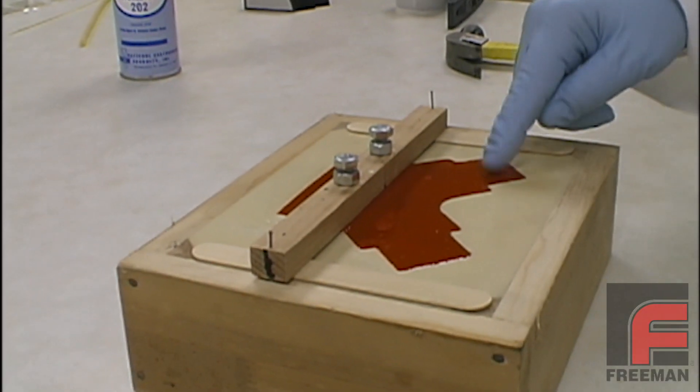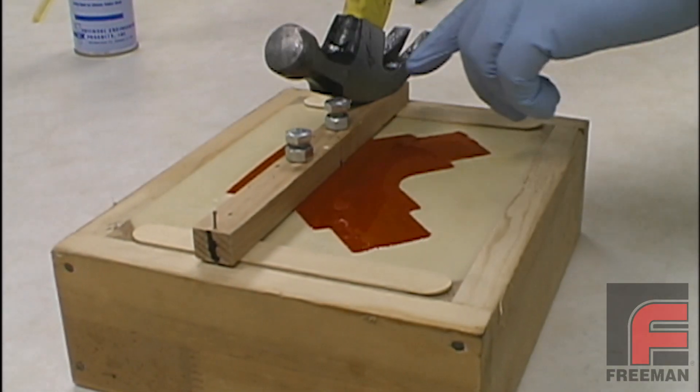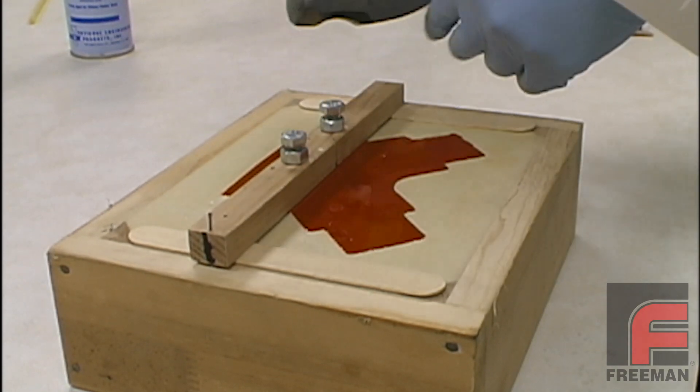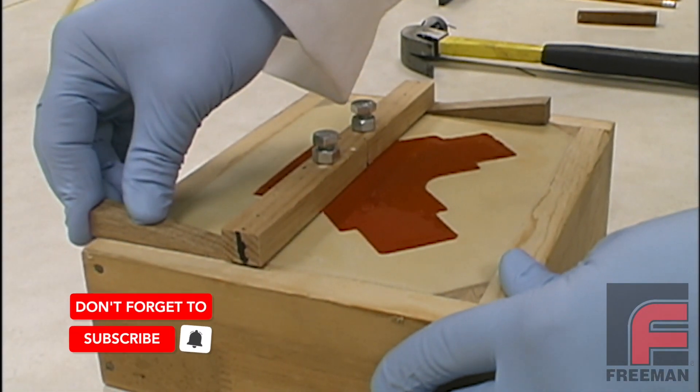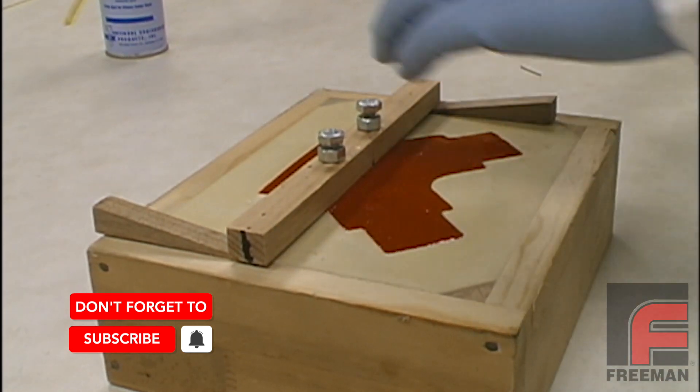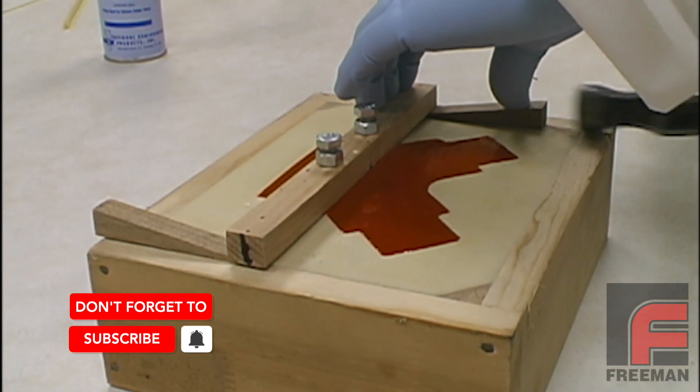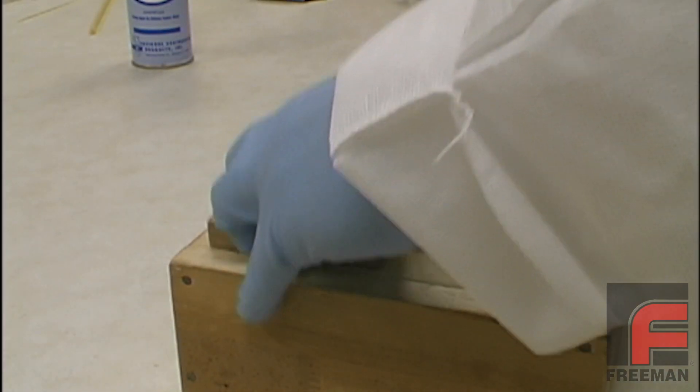After 16 to 18 hours, we are ready to demold our part. First, we remove the nails that held the suspension bar in place. Next, we remove our shims and place wedges underneath the bar. By lightly tapping on the wedges with a hammer, our part lifts out of the mold easily.